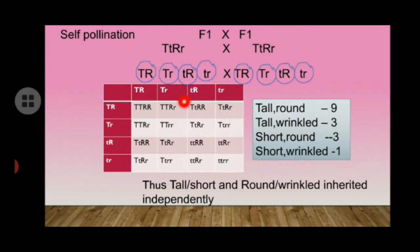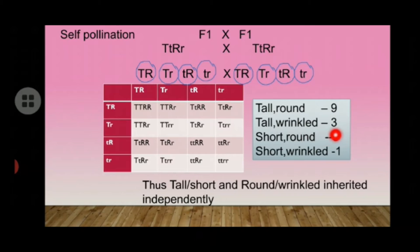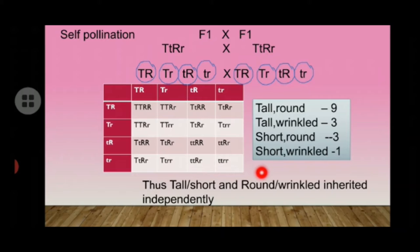Likewise, we combine all the gametes and fill the boxes. The result observed is: tall plant with round seeds in the ratio 9, tall plant with wrinkled seeds in the ratio 3, short plant with round seeds in the ratio 3, and short plant with wrinkled seeds in the ratio 1 — giving a 9:3:3:1 ratio.